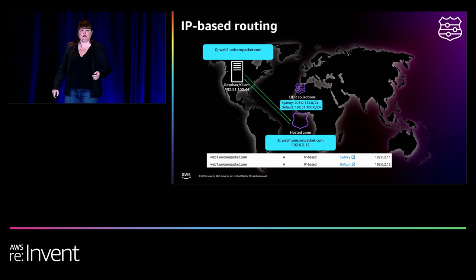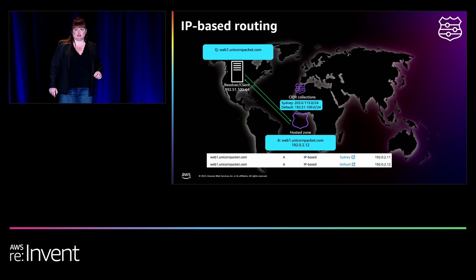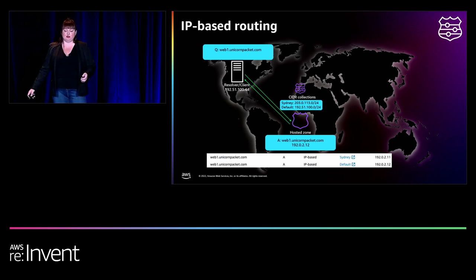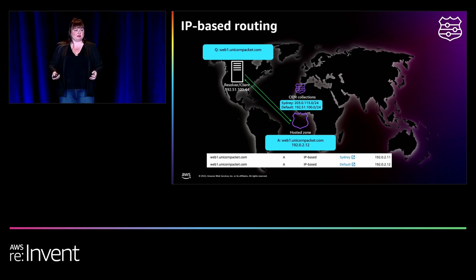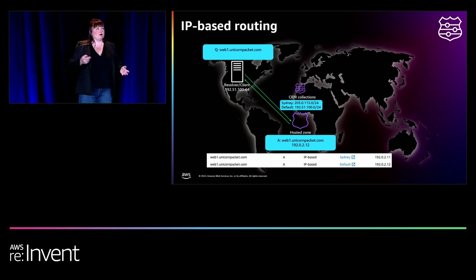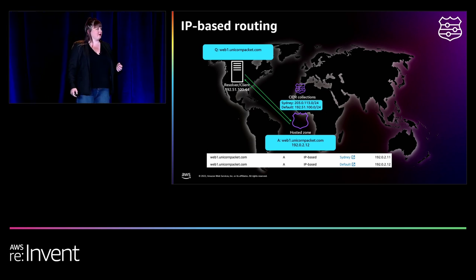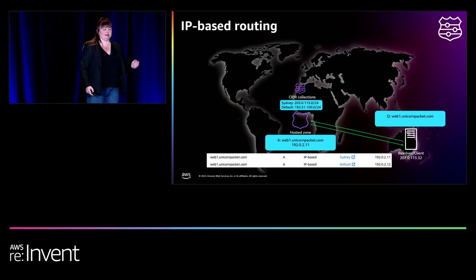IP-based routing was announced by AWS in June. You can use it to route traffic to resources based on the client subnet. You create a set of CIDR blocks — CIDR standing for Classless Inter-Domain Routing — which represent the client IP network ranges. You then map them to a location, such as Sydney — once mapped, it's known as a CIDR collection. When queried, if the IP value in the DNS resolver matches one of the subnets for a given location, Route 53 will respond with the corresponding answer in the resource record set.